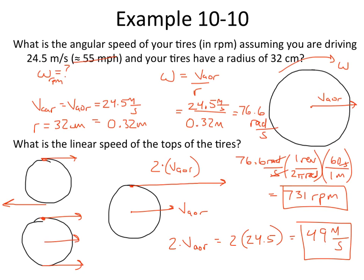So that's a little bit about not just rotational motion, but also linear motion as well. As we move forward, we're going to do more examples involving those two types of motion — linear speed, linear motion, and rotational motion. That's it for now. Thanks for following along. If you have any questions, make sure you ask me, and I'll see you on the next one.